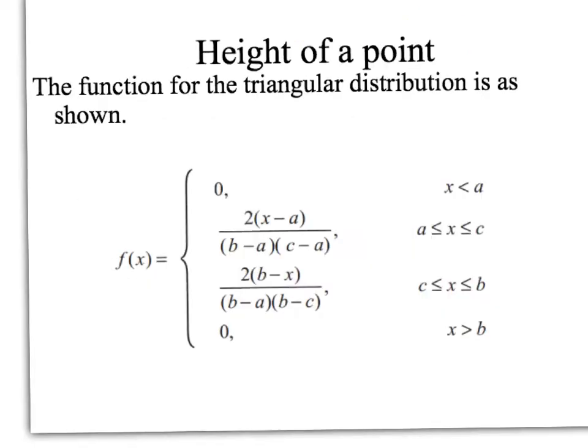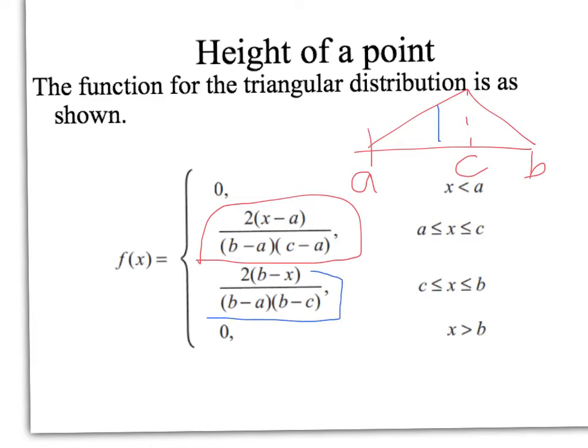So this is the rather ugly formula for the triangular distribution. Students in my class will know my views on this, that really all this is is finding the area of a triangle. So this is the height part of the triangle. If you want to use the formula, that's fine. Just make sure that you know what your A, your B and your C are. Notice that we've got two parts of the formula. This bit here is what you use if you're looking for an X value in between A and C. And this part here is what you use if you have an X value between C and B. So we'll come back to this.